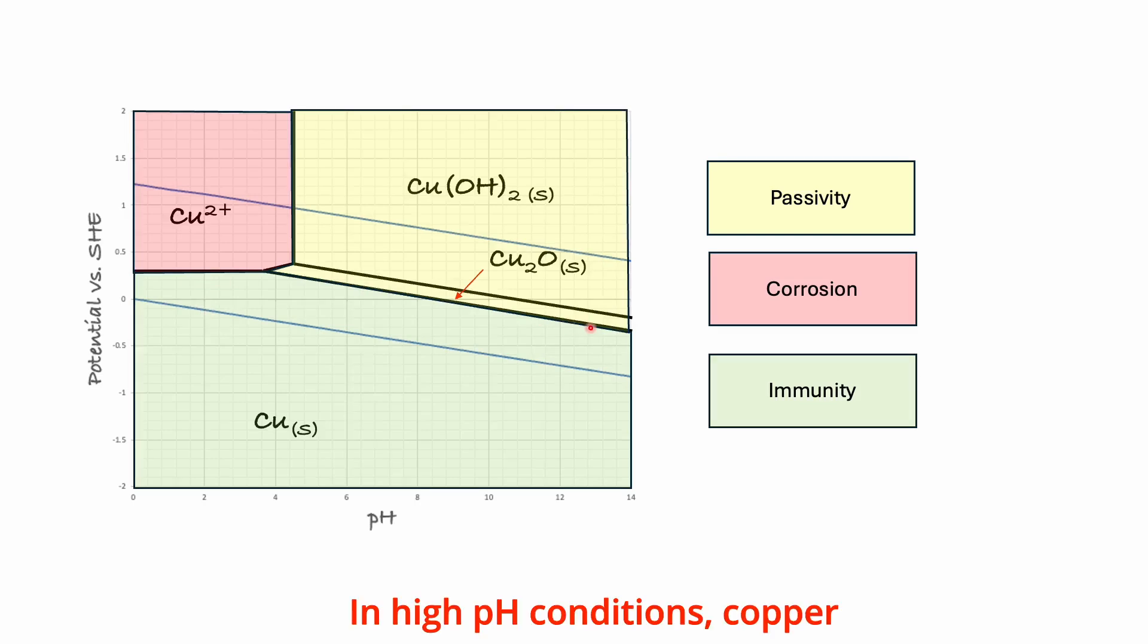In high pH conditions, copper has passive behavior, indicated by the formation of stable oxide or hydroxide films on its surface.